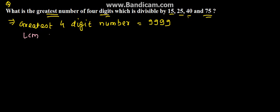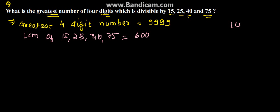Now we need to find the LCM of 15, 25, 40 and 75. The LCM of these 4 numbers is 600. I have explained how to derive this LCM in a different video — how to find the LCM and GCM — you can check the playlist for it. So the LCM of these 4 numbers is 600.